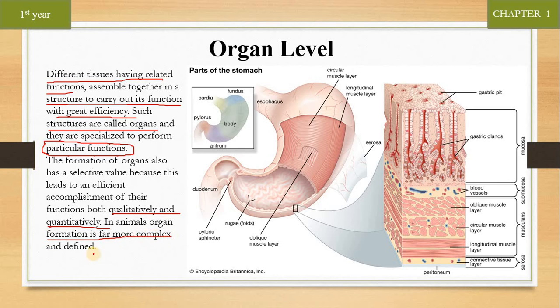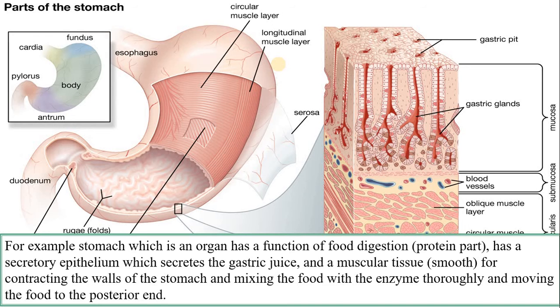Plant کے اندر organ formation complex بھی ہوتی ہے اور واضح بھی ہوتی ہے، لیکن اس طرح animals کے اندر نہیں ہوتی۔ اگر ہم stomach کو example میں دیکھتے ہیں تو stomach کے example سے یہ بات سمجھ سکتے ہیں۔